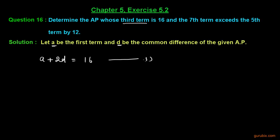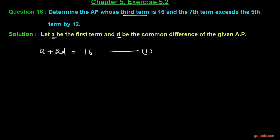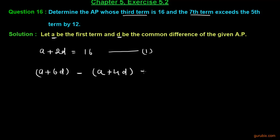We let that as equation number 1. We are also given that the seventh term exceeds the fifth term by 12. We can write the seventh term as A plus 6D and the fifth term as A plus 4D, and if we subtract the fifth term from the seventh term we get 12.